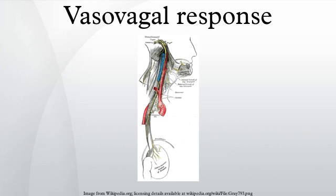A vasovagal episode, or vasovagal response or vasovagal attack, is a malaise mediated by the vagus nerve. When it leads to syncope or fainting, it is called a vasovagal syncope, which is the most common type of fainting.